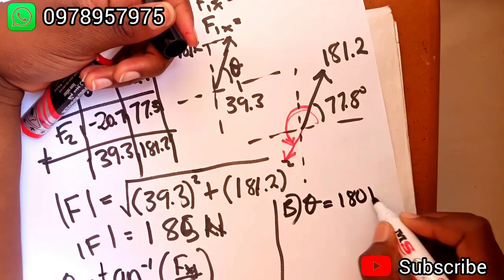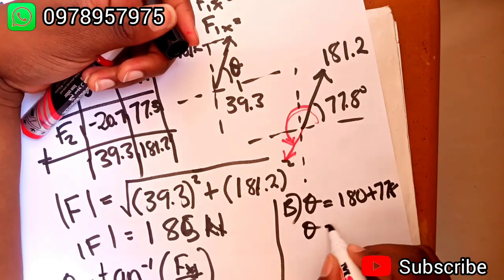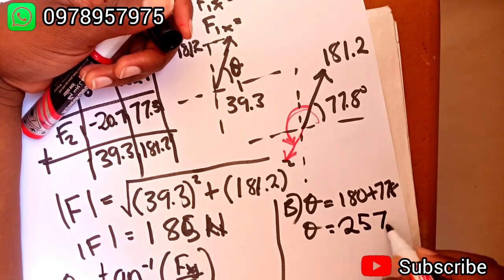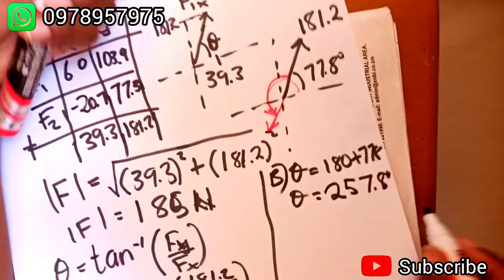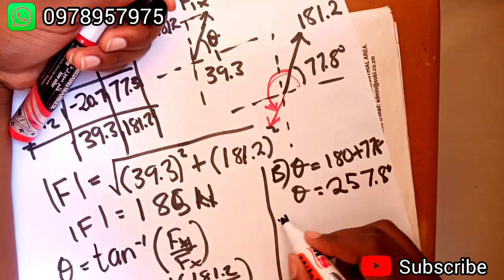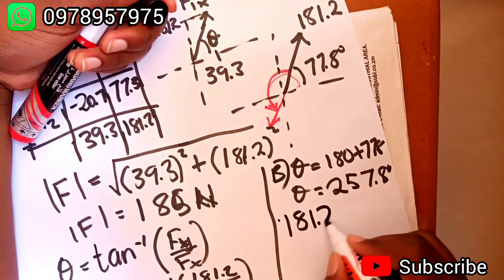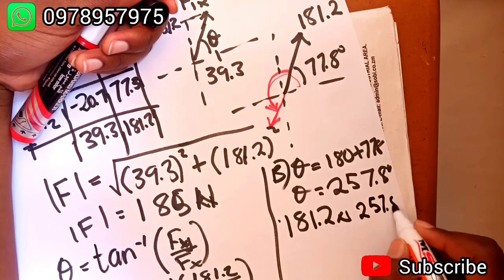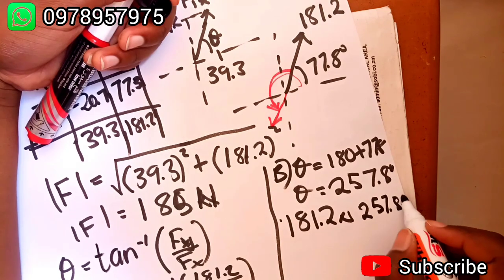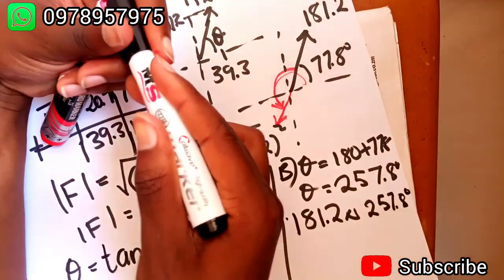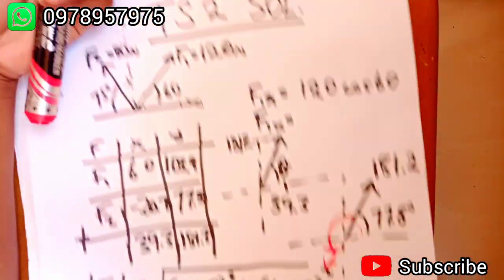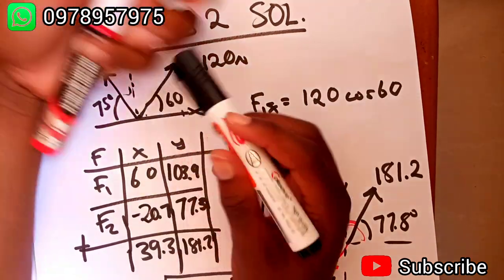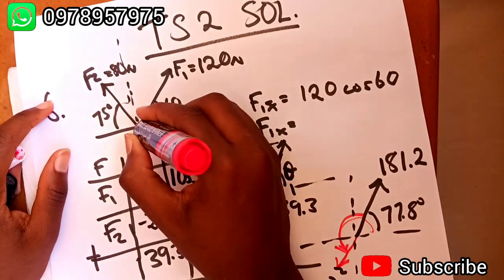Theta this one will just give us 257.8 degrees. So you can see the person must pull with 181.2 newtons at an angle 257.8 degrees. And when he does this, he's going to find that there will be zero net force.